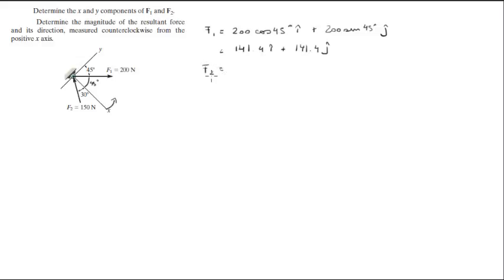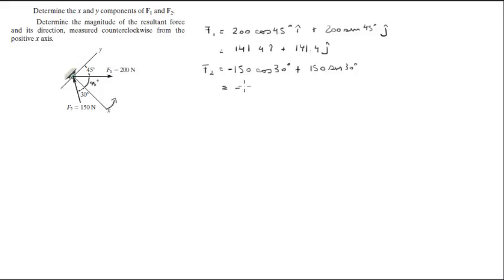For the second force, you gotta notice that it's pointing towards the origin. The first force is 150 in the negative x direction — see the positive goes this way — cosine of 30 degrees, plus 150 sine of 30 degrees. When you solve this you get that is equal to negative 129.9 in the i, plus 75 in the j.